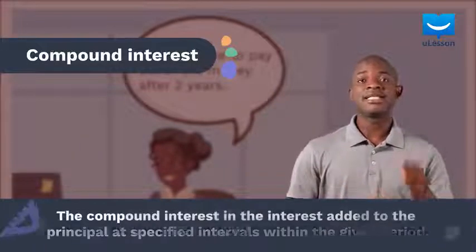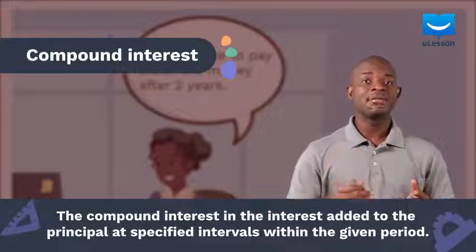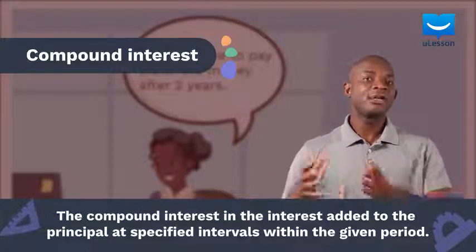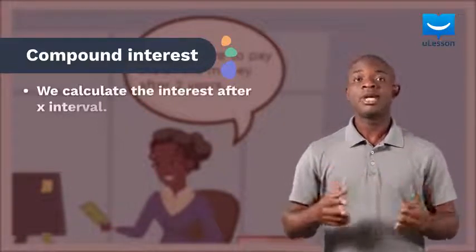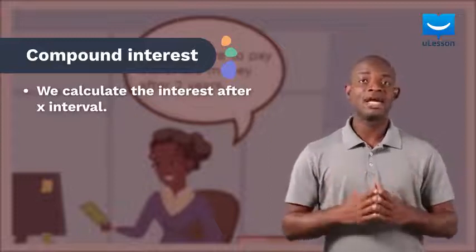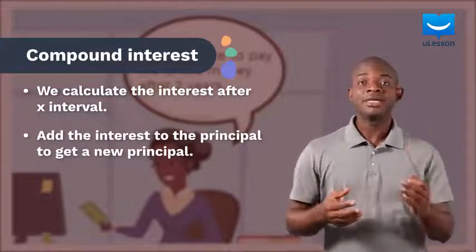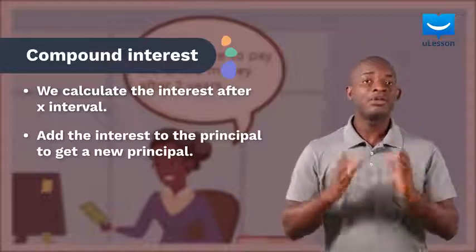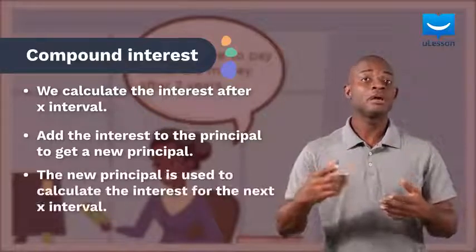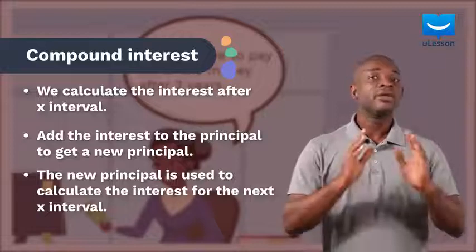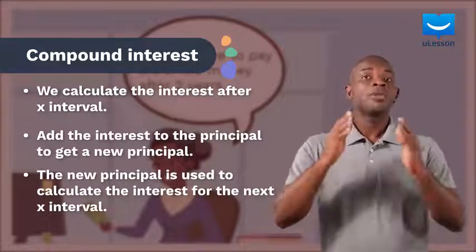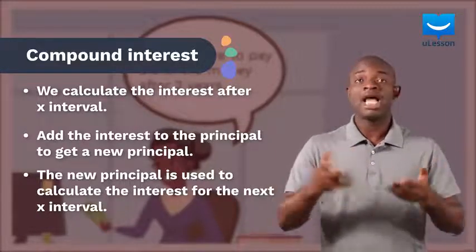The compound interest is the interest added to the principal at specified intervals within the given period. When compound interest is paid over a principal P and at given intervals X, we calculate the interest after each X interval, and then add the interest to the principal to get the new principal, which is used to calculate the interest for the next interval. This process is repeated until the given period or time elapses.